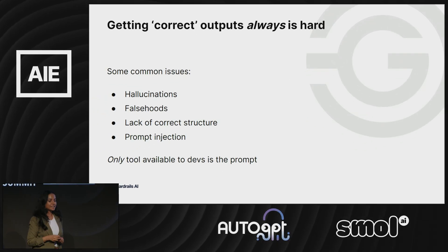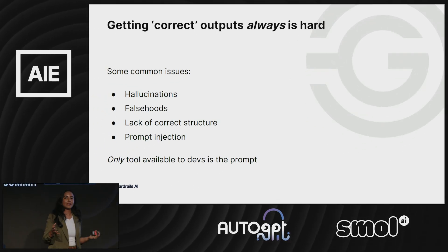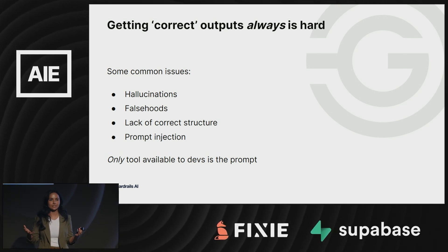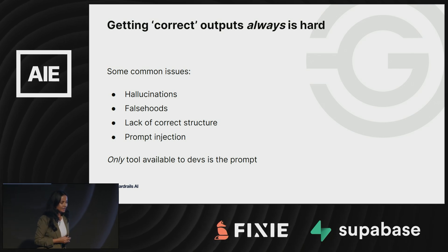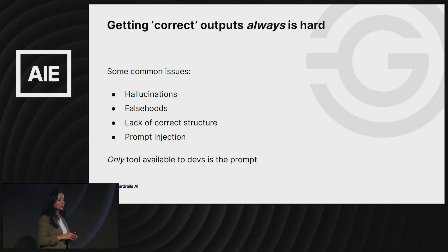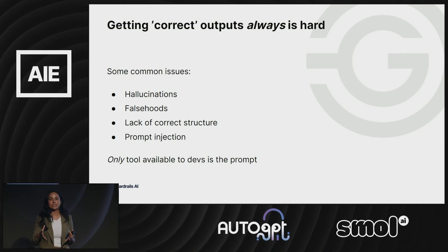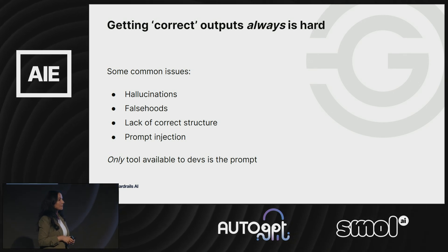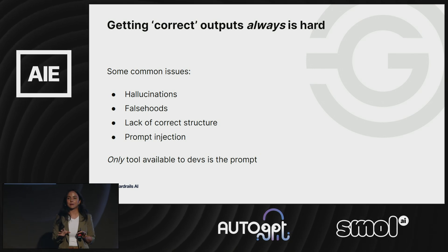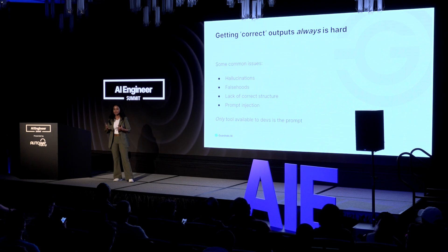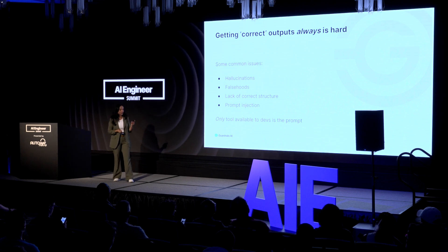Diving deeper into the problem: a lot of common issues as you work with these problems include hallucinations — that's a very buzzwordy thing many of us are familiar with. But there are a lot of other issues, like correct structure, vulnerability to prompt injections. And all of this is exacerbated by the fact that, unlike all previous generations of programming, the only tool really available to you is English — it's just the prompt that you can really work with.